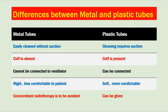Comparing metal and plastic tracheostomy tubes: metal tubes can be easily cleaned without suction because the inner tube can be removed and cleaned regularly, while plastic tubes have only one lumen and require suction for cleaning. Metal tubes have no cuff; plastic tubes have a cuff and can therefore be connected to a ventilator, which metal tubes cannot. Metal tubes are rigid and less comfortable; plastic tubes are malleable, thermolabile, softer, and more comfortable. The most commonly used tube is the Portex single-lumen tracheostomy tube. Concomitant radiotherapy should be avoided with metal tubes as they absorb radiation; plastic tubes do not absorb radiation, so radiation therapy can be given — preferably with an uncuffed tube.